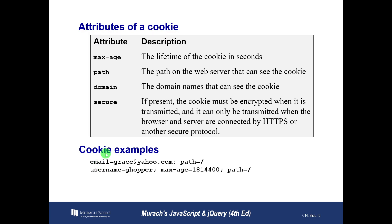Here are a couple of examples of cookies. Cookies are basically key-value pairs — we have a name and a value. For example: 'email=grace@yahoo.com; path=/' or 'username=ghopper; max-age=1814400; path=/'. That 1,814,400 seconds is 21 days. These are just strings of text, and we have to process those strings, so we do a lot of string manipulation — think back to earlier chapters on string processing.